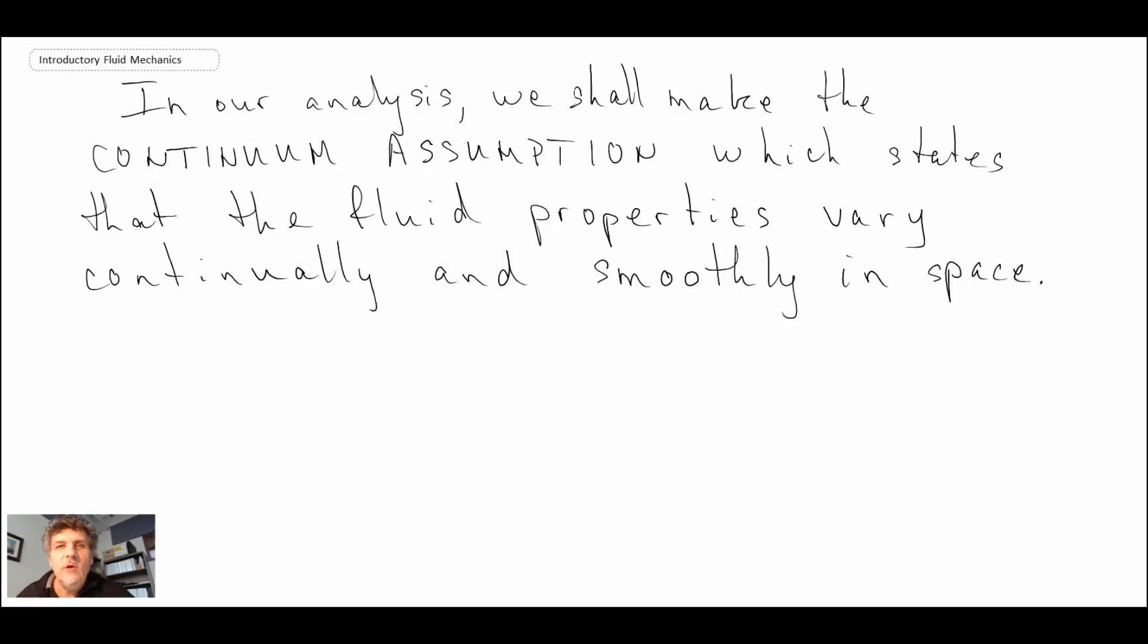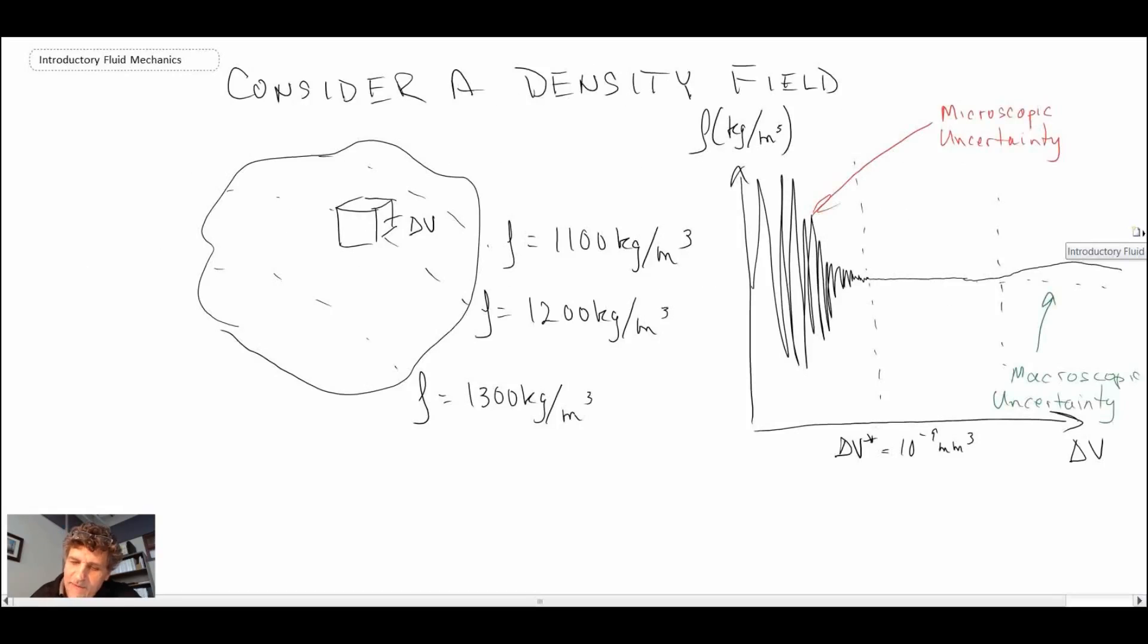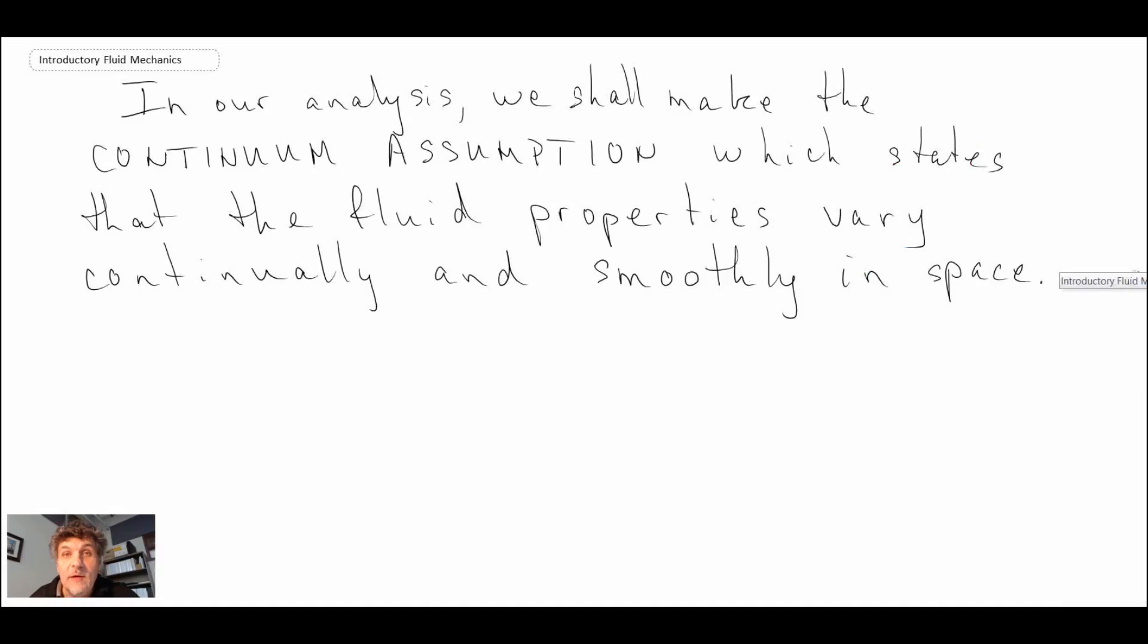That is the continuum assumption or approximation that we'll be using in fluid mechanics. We're assuming that the sample size we're using is such that we do not have any kind of variability. Consequently, we're dealing for the most part in this zone here where our density has converged and does not vary with the delta V's that we're looking at. That would be the continuum assumption, and that is another aspect that we need to know as the basics of studying fluid mechanics.